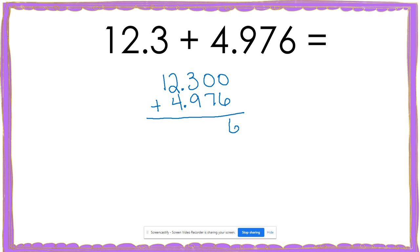Zero plus six is six. Zero plus seven is seven. Three plus nine is 12. And I carry my one. I can bring down my decimal so that I don't forget it. One plus two is three. Three plus four is seven. And then one can be brought down. So the sum is 17.276 or 17 and 276 thousandths.